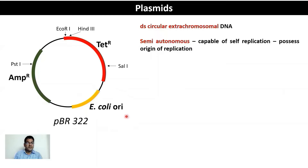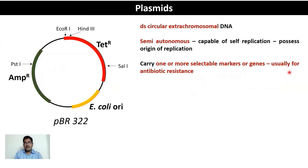Plasmids have their own origin of replication, known as ORI, from which DNA polymerase can catalyze replication independently of the host DNA. This allows for amplification of your DNA into a large number of copies irrespective of whether the host DNA is amplifying or not.